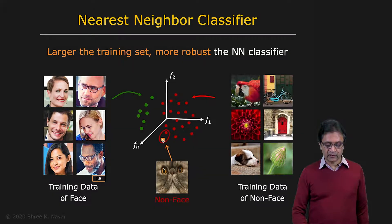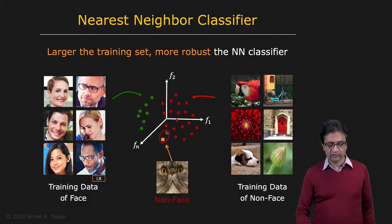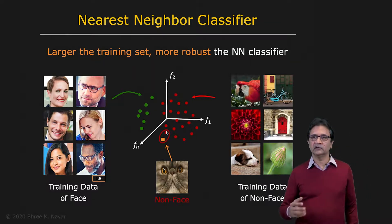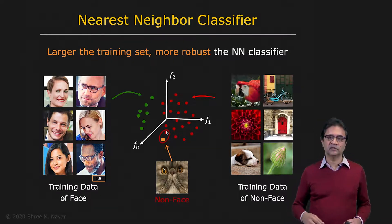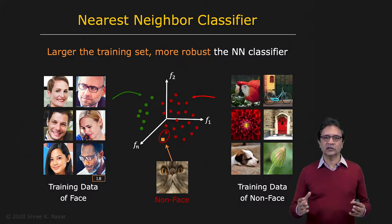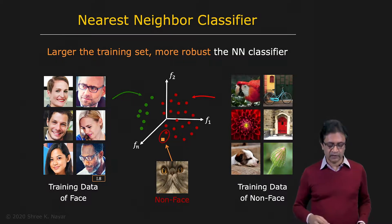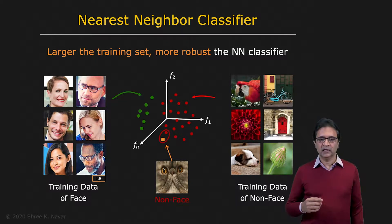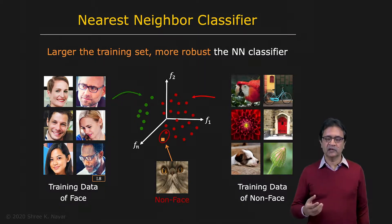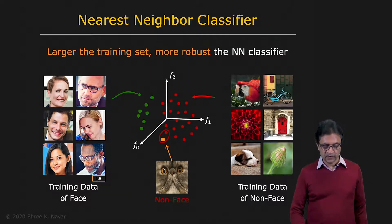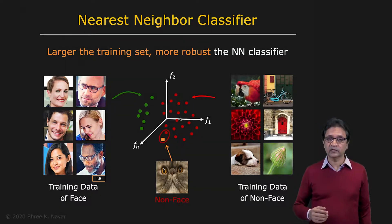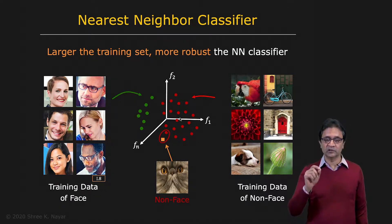Now it's very likely that this point is going to be closer to one of these non-face points. In the nearest neighbor classification domain, you can solve a lot of problems by just using tons of data. But remember that finding the nearest neighbor is still expensive, because the brute force approach is comparing the new point with every point in your database.